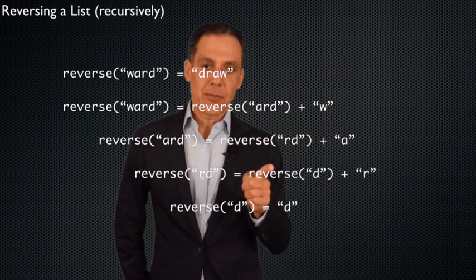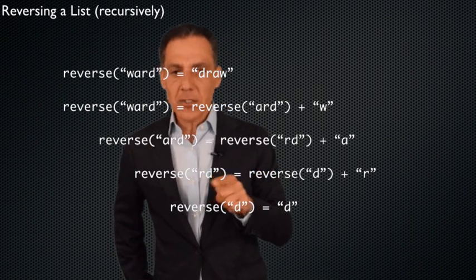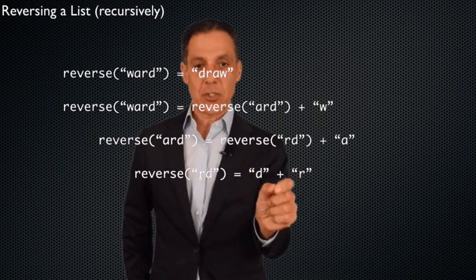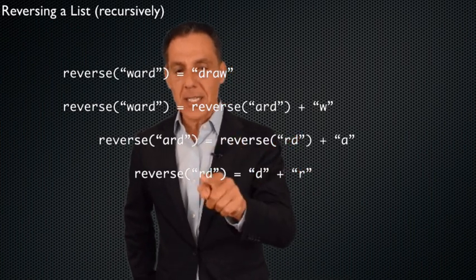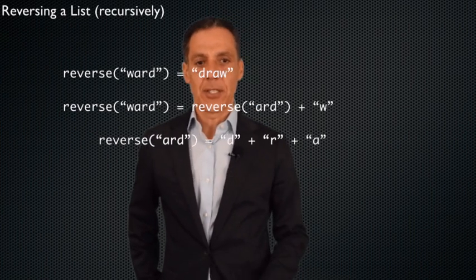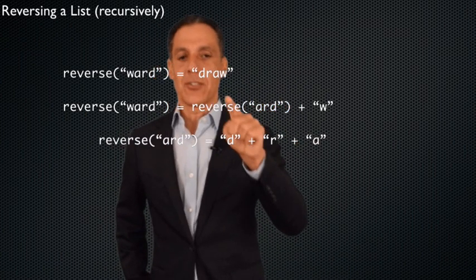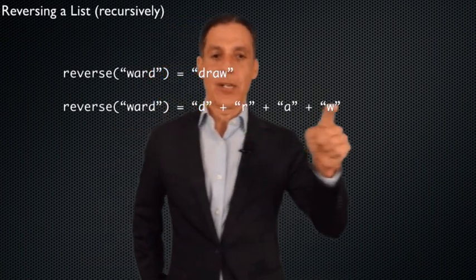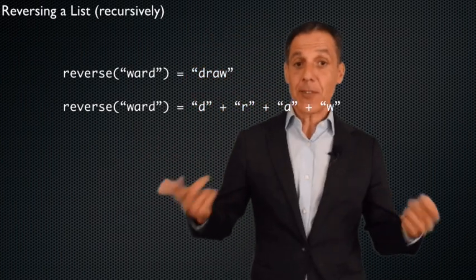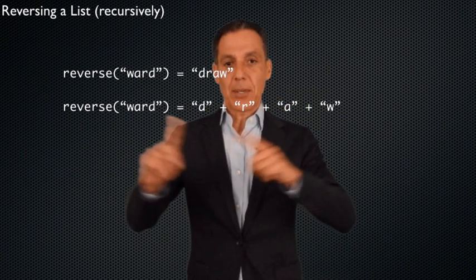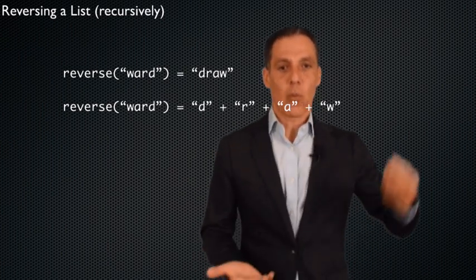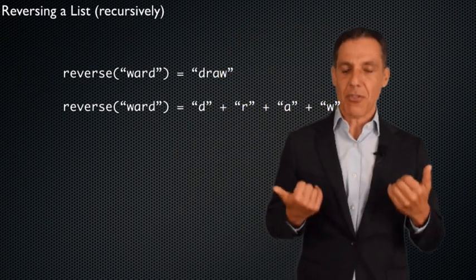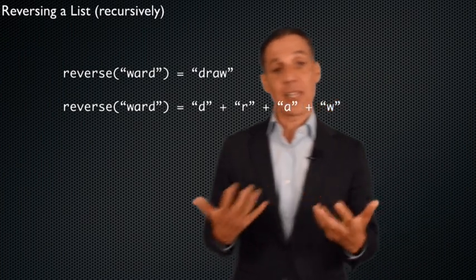Starting at the bottom: reverse of 'd' is 'd'. So reverse of 'r-d' is just the string concatenation of 'd' and 'r'. No recursive call, no work to be done — just do the string concatenation. So the reversal of 'r-d' is 'd-r', concatenated with 'a'. So 'd' plus 'r' plus 'a' — the reversal of 'a-r-d' is 'd-r-a'. Pop that back up one, and the reversal of 'ward' is 'd-r-a-w'. Notice it's really a different algorithm — instead of swapping, I'm building up an expression of string concatenation by peeling off one letter at a time. That's what I meant when I said recursion requires thinking quite differently about the nature of computation, in a very elegant way.